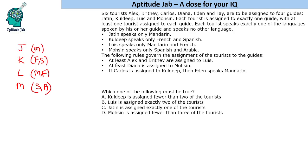At least Alex and Brittany are assigned to Louis — meaning A and B are assigned to Louis at minimum, so we can have more people there too. Diana is assigned to Mohsen. This means Alex and Brittany can speak Mandarin or French, and Diana could speak Spanish or Arabic.